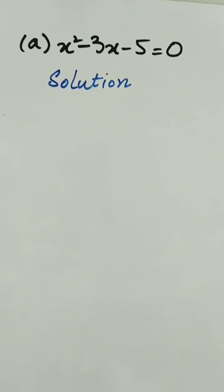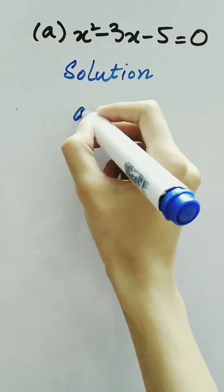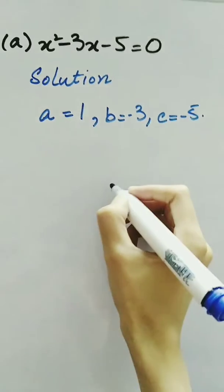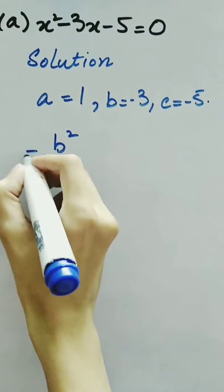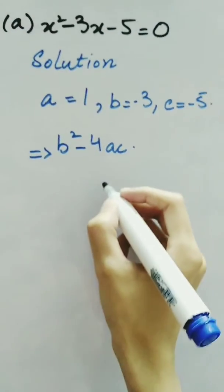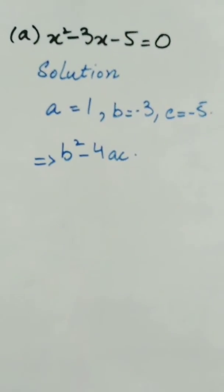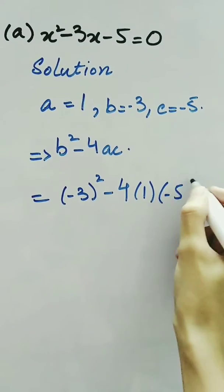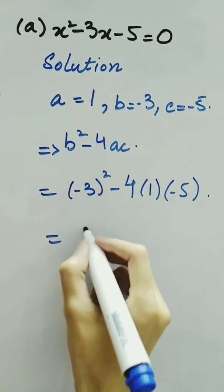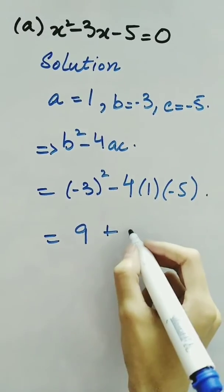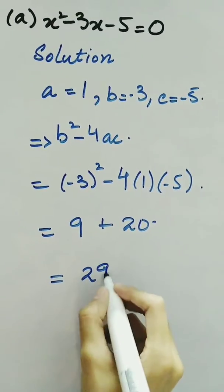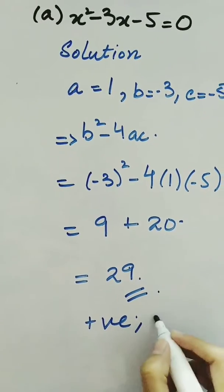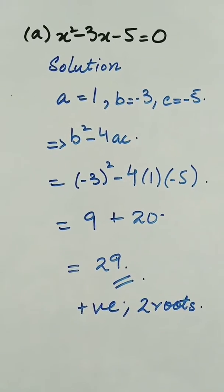Here we have a question x squared minus 3x minus 5. The value of a is 1, b is minus 3, and c is minus 5. We use the discriminant b squared minus 4ac. So we have minus 3 squared minus 4 times 1 times minus 5. Minus 3 times minus 3 is 9, and minus minus becomes plus, so 4 times 5 is 20. The value of b squared minus 4ac equals 29, which is positive. So we can say that this equation has 2 roots.